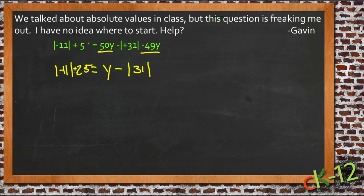So we're going to have, from the left-hand side, negative 11 plus 25 equals y minus the absolute value of 31.